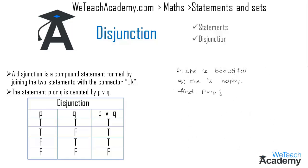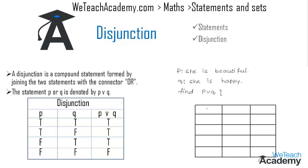Now consider another example where P is 'she is beautiful' and Q is 'she is very happy'. We need to find the truth value for the disjunction P or Q. Drawing a truth table with three columns: if both P and Q are true, P or Q is true. If P is true and Q is false, P or Q is true. If P is false and Q is true, P or Q is true. If both P and Q are false, P or Q is false.